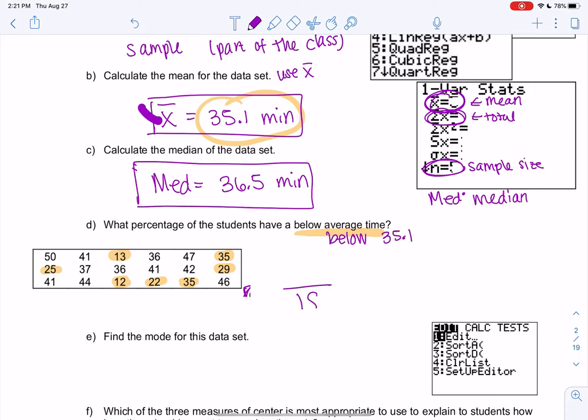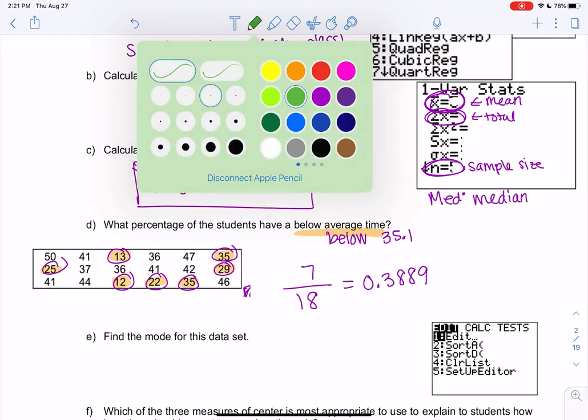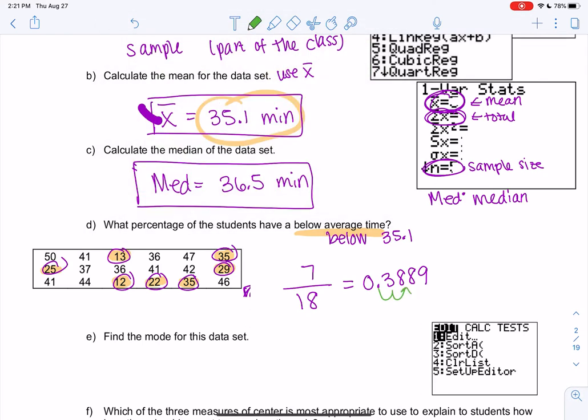So there were 18 total students. We could count or we could remember from the top. And then 1, 2, 3, 4, 5, 6, 7 of them are below average. So we're going to divide. I'm going to do four decimal places, 0.3889. And then we move the decimal two to the right to get a percent. So that would be 38.89%. Cool.